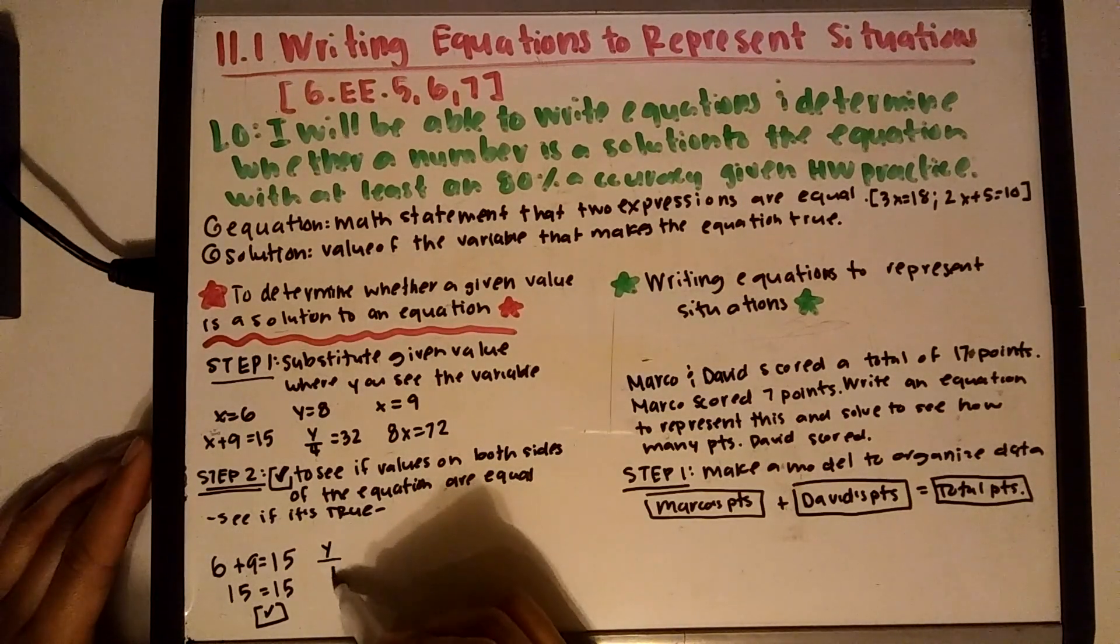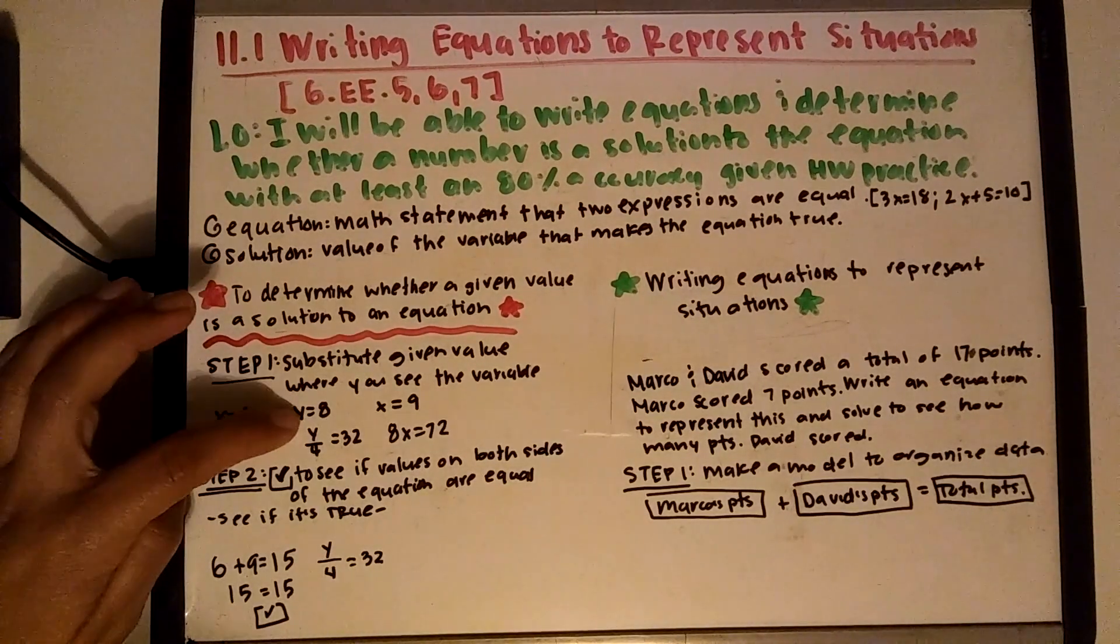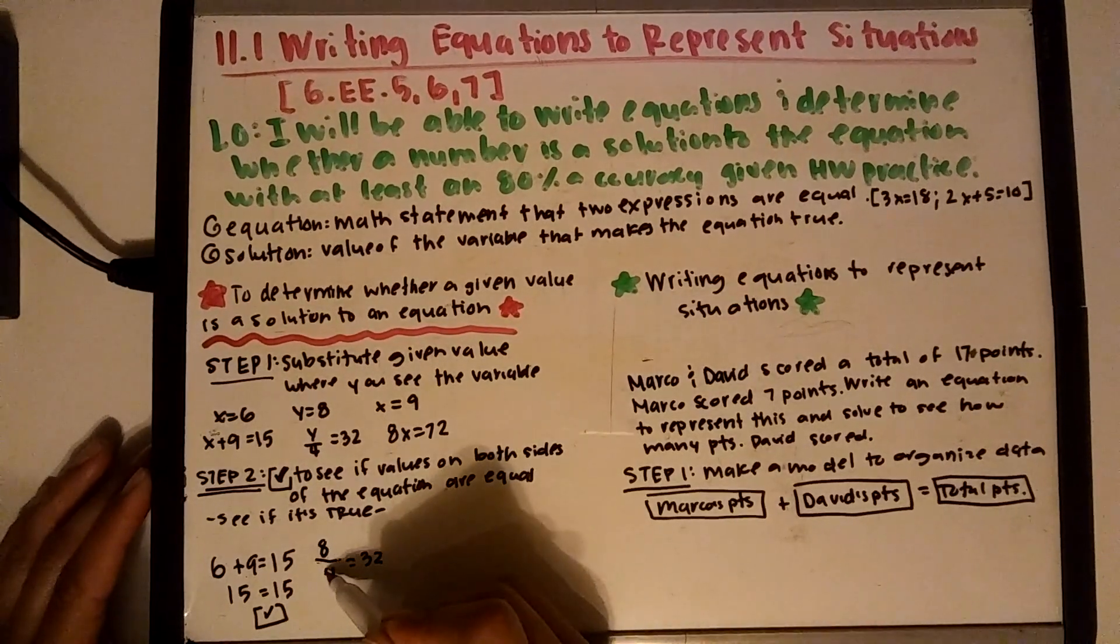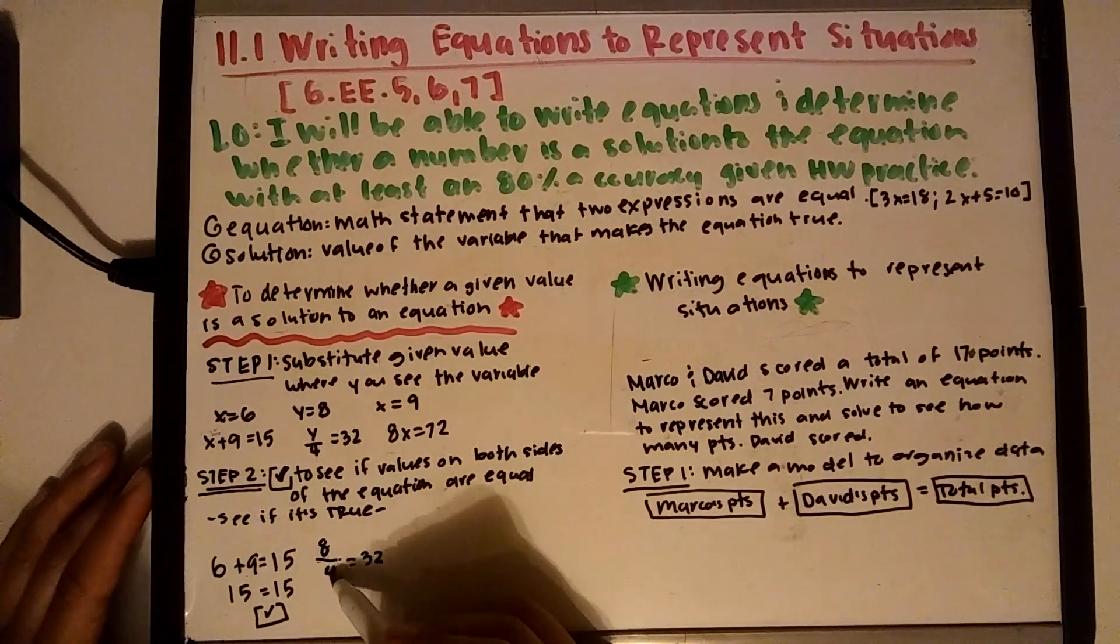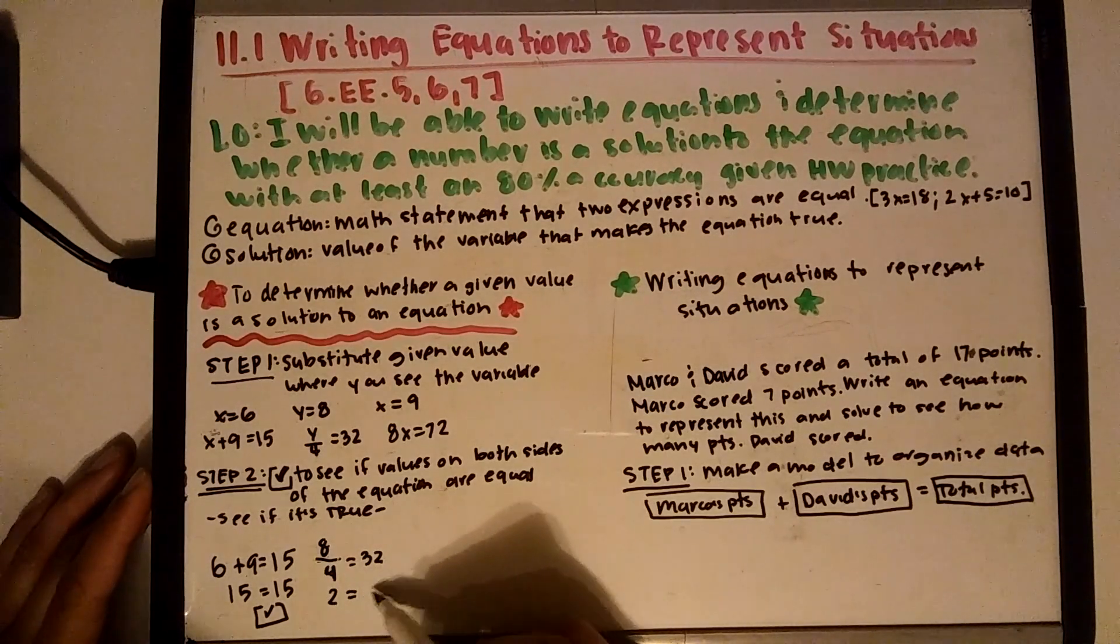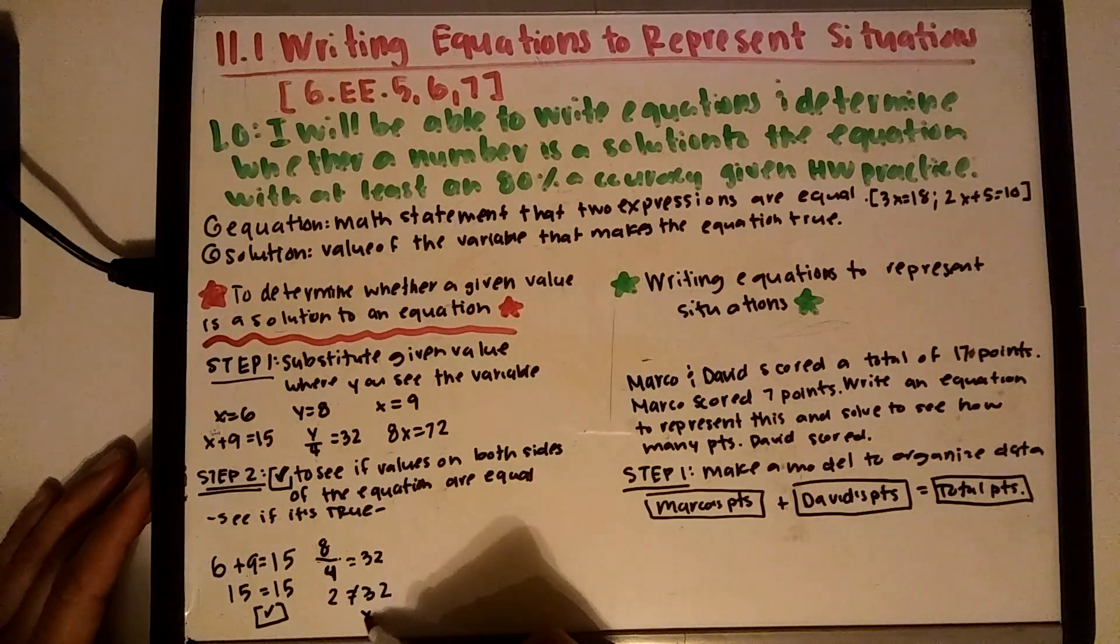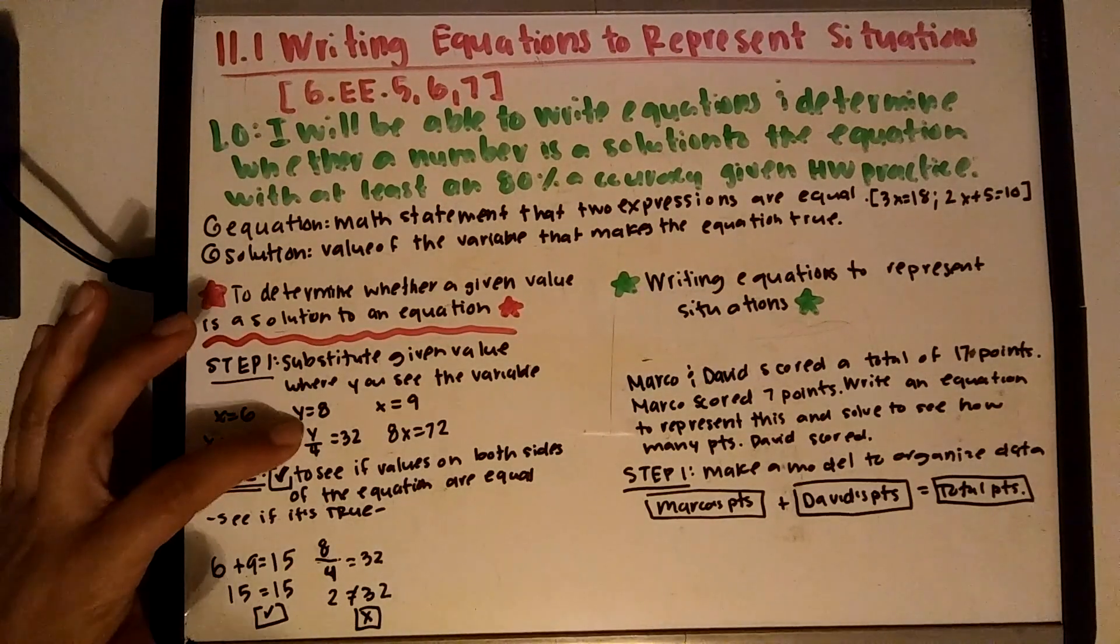Let's check the next one. y divided by 4 equals 32, and I'm given that y equals 8. So I'm going to replace the y there and write my 8. The question is, is 8 divided by 4 equals 2, so is 2 the same as 32? No, they're not equal, so this one doesn't work. So 8 is not a solution for this equation.